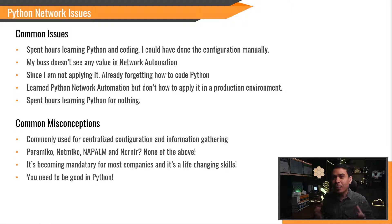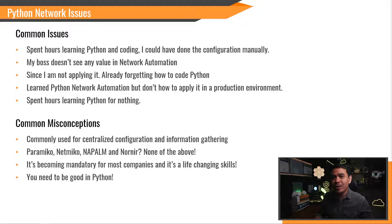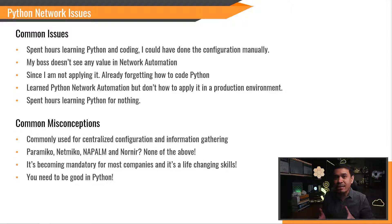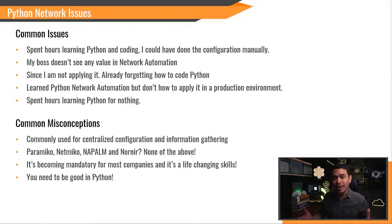Next: you are proposing a network programmability and automation solution to the boss, but the idea is disregarded. Why? Maybe because he doesn't see any value. There's a saying — if you don't use it, you will lose it. In the case of Python, since you are a network engineer and you're not applying the things you learned, it makes total sense. Some people just learn Python automation because it looks cool, but how will you use it in a production environment?